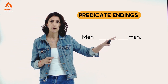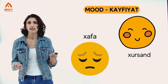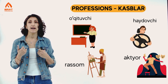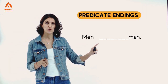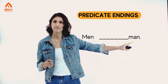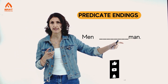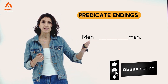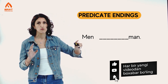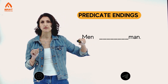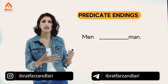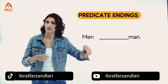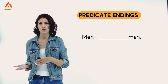Men, blank, man. Here we can put profession, mood, or nationality. Let's take the word teacher — oktuche. If I want to say 'I am a teacher': men, oktuche, man. Pay attention — this is not a separate word, it's a predicate ending. In literate language: men oktuche man. In dialect this can sound the same: men oktuche man.